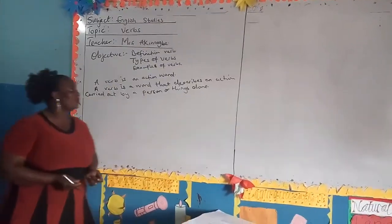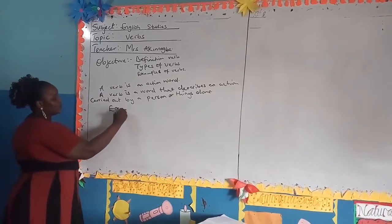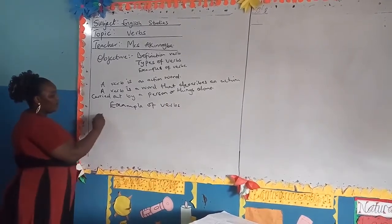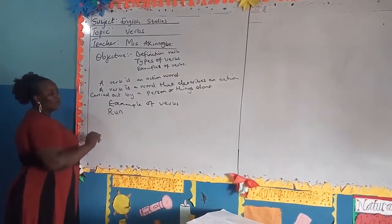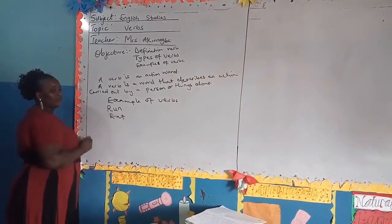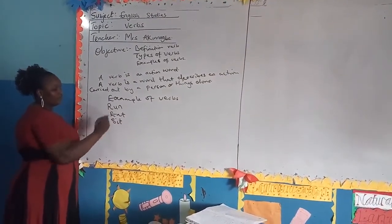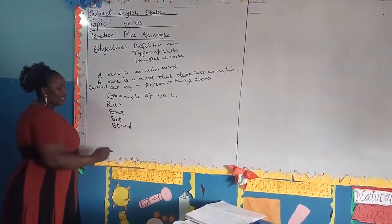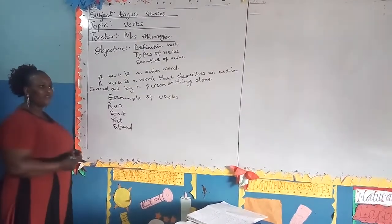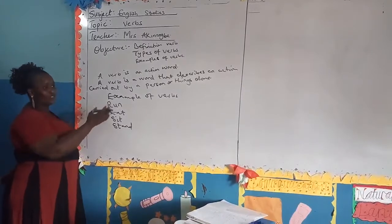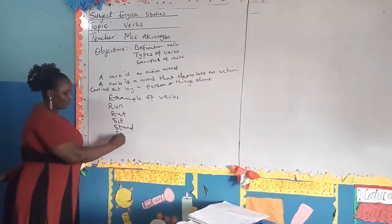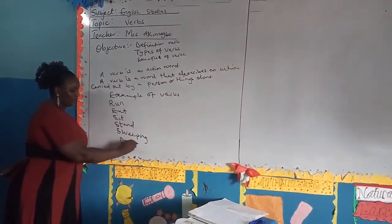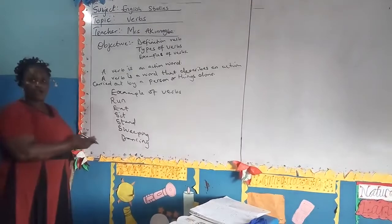So we have examples of verbs. We have run. We have eat. We have sit. We have stand. And we also have other verbs that you can use. Things you do around you. Sweeping, or dancing. These are examples of verbs.